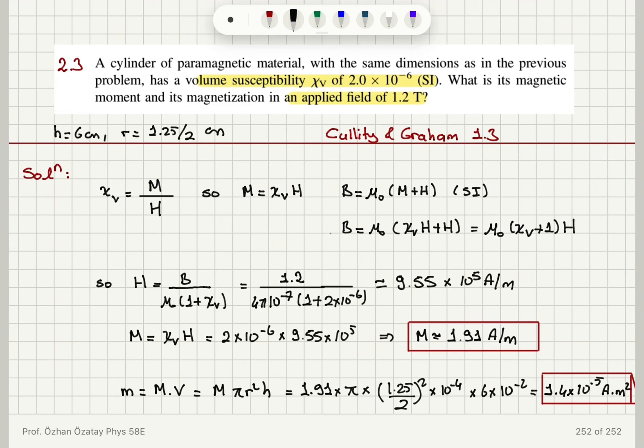So I have used the definition of the volume susceptibility, magnetization divided by the magnetic field H, and the constitutive relation B = μ₀(M+H), these are all in SI. And I have obtained H in ampere per meter, magnetization in ampere per meter, and the total magnetic moment in ampere meter squared by multiplying the magnetization with the volume, being careful with the units since I'm using SI. H and r were converted to meters.